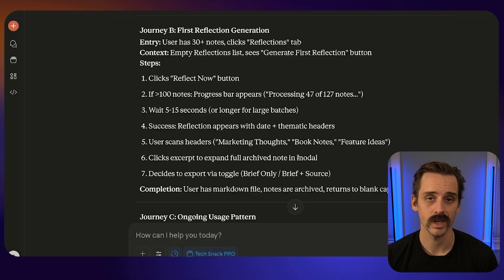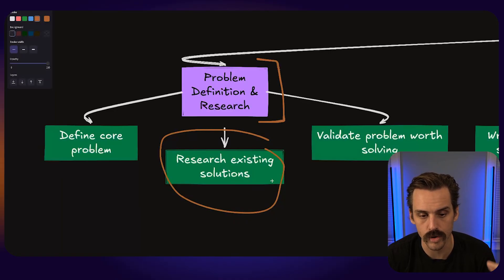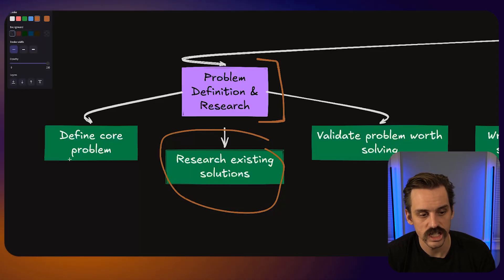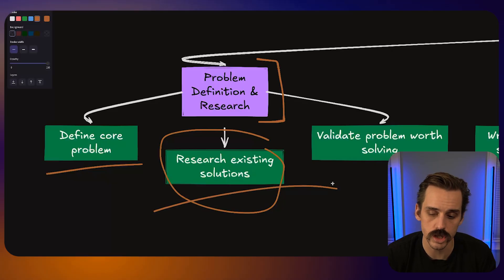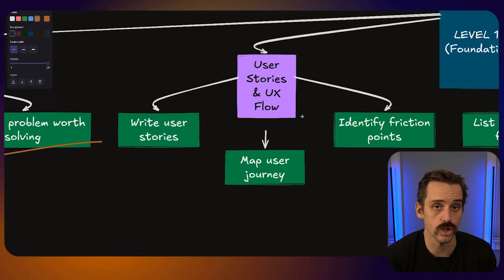If the problem is that I can't capture things effectively, I'm probably building third-party integrations with all the different note-taking apps and merging them into a single source of truth. But if the problem is that I'm having a hard time synthesizing that stuff, then I need to build some sort of engine powered by a language model that can look at all the different sources of information and do something with it. That's why you have to be very, very clear on exactly what problem you are solving. Once we've identified that, found other solutions, and know it's worth solving, we figure out how it manifests in the user experience.